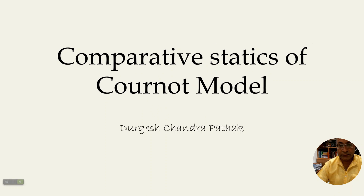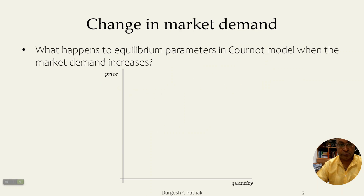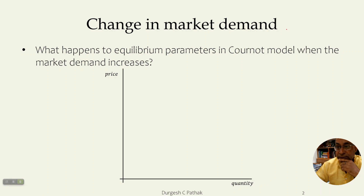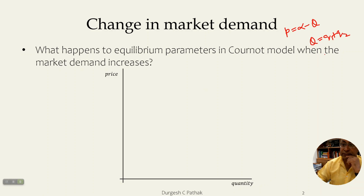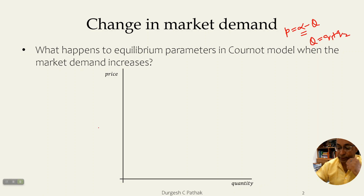So let us look at the comparative statics of the Cournot model. If you remember, we had our inverse demand function given as P equals alpha minus Q, where Q was the market quantity — the summation of individual quantities supplied by both firms — and alpha was the parameter from where the demand curve starts.